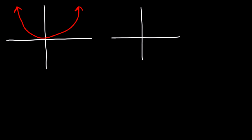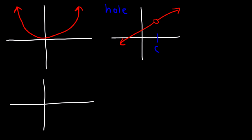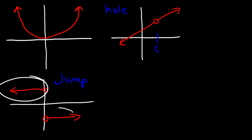Now let's talk about continuity. This graph is continuous everywhere — there are no jumps or breaks in the graph. In this example, we have a point of discontinuity at some x value which we'll call c. This particular type of discontinuity is known as a hole. Here's another type called a jump discontinuity, because the left side and the right side do not connect.